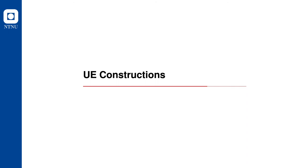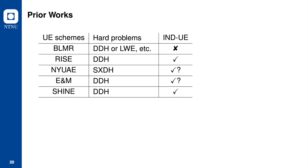We will now discuss our post-quantum secure UE construction. In the table on this slide, we provide a comparison of UE schemes from prior literature. BLMR is an application of key homomorphic PRFs. However, the encrypted nulls in the ciphertext can be decrypted by an update token, which makes it impossible for BLMR to achieve IND-UE security.